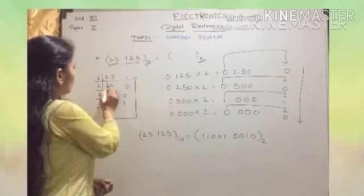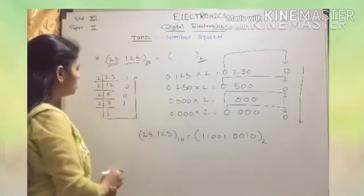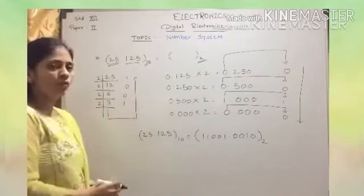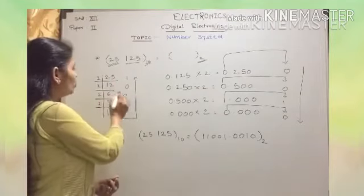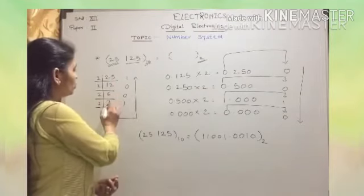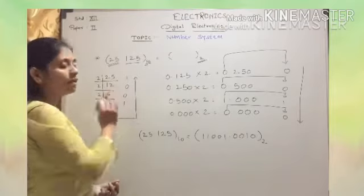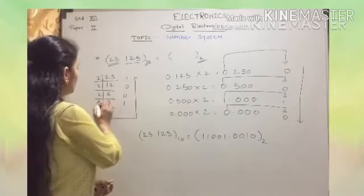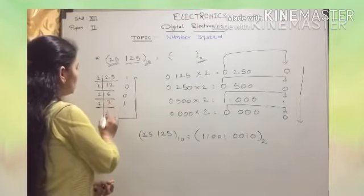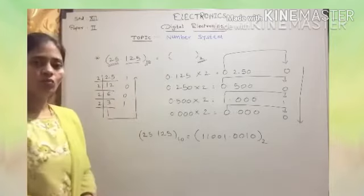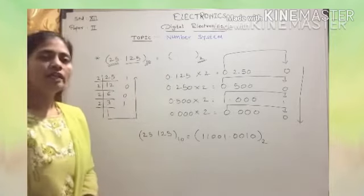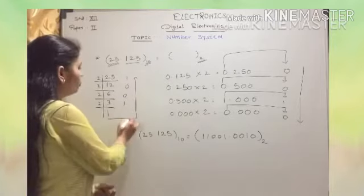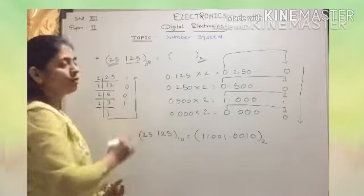Then 12 is divided by 2, giving quotient 6 and remainder 0. Then 6 is divided by 2, giving quotient 3 and remainder 0. Then 3 is divided by 2, giving quotient 1 and remainder 1. For the integer part, we have to write the answer from bottom to top.